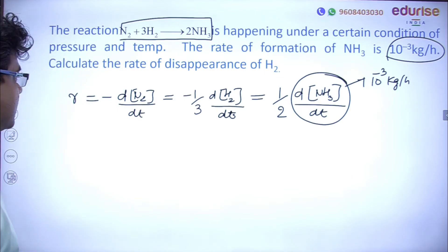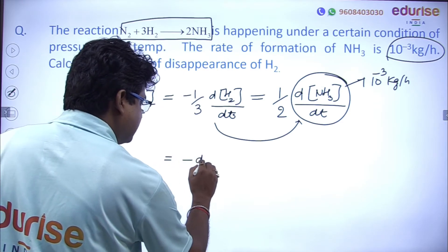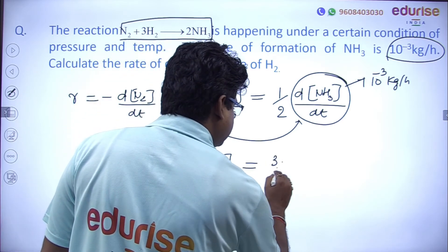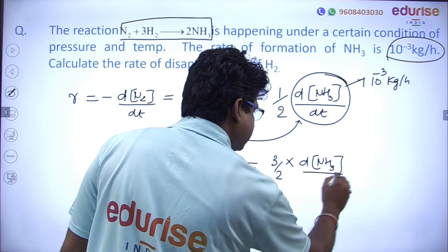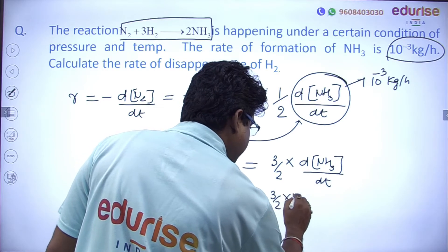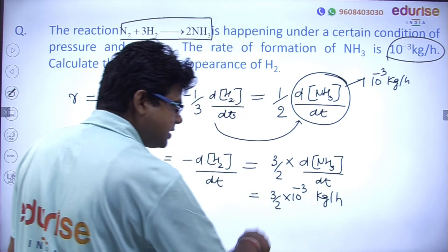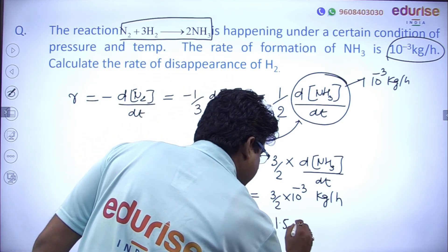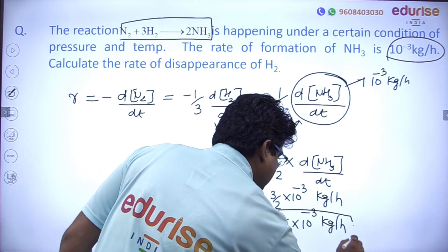Rate of disappearance of H₂: −d[H₂]/dt = (3/2) × d[NH₃]/dt. Putting in the given value: (3/2) × 10⁻³ kg/hr = 1.5 × 10⁻³ kg per hour. In one hour, this much H₂ disappears. So the answer is 1.5 × 10⁻³ kg per hour.